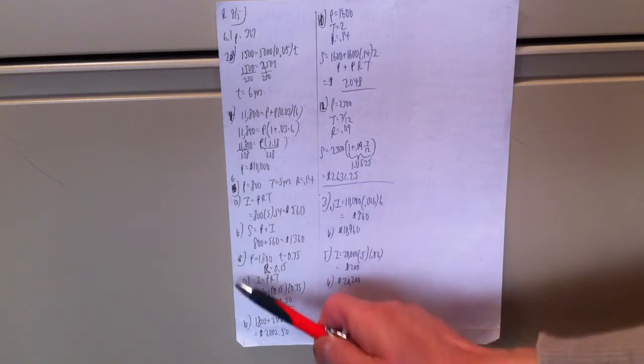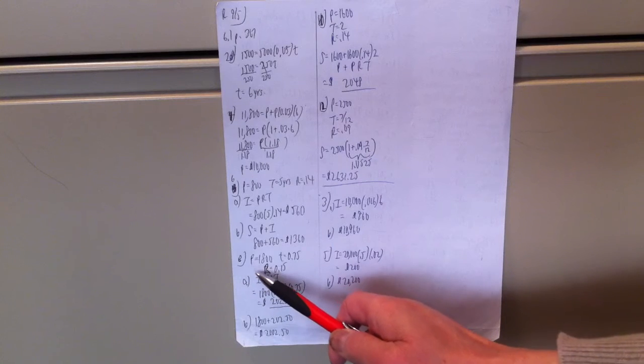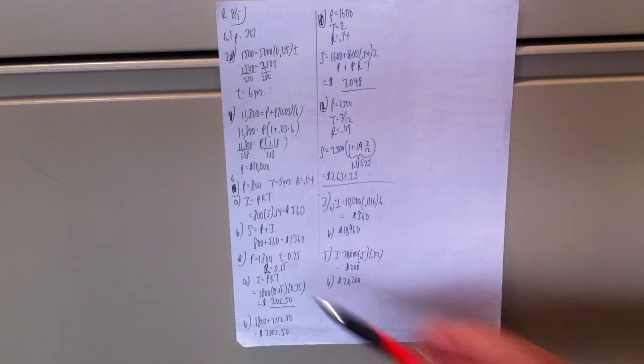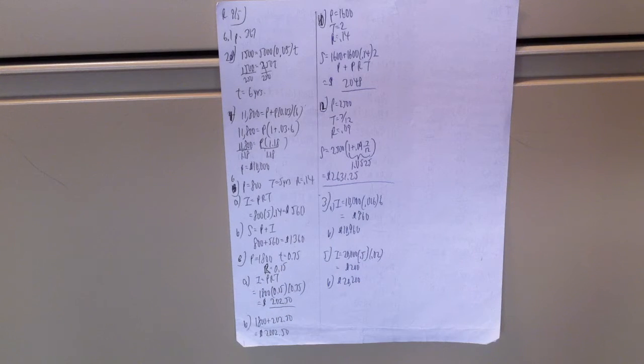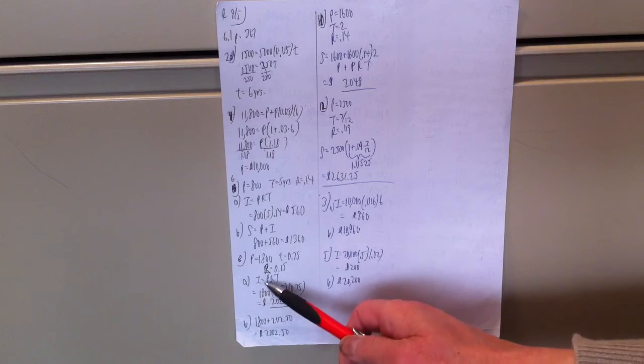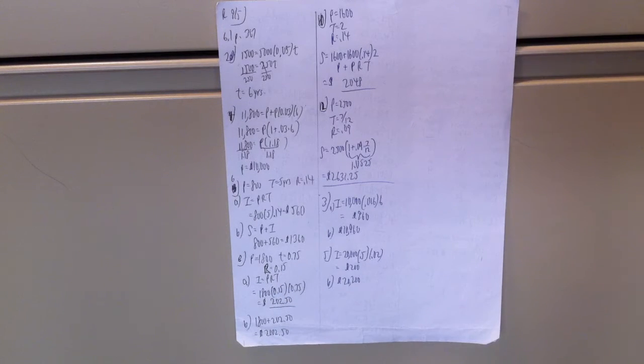Number 8. Principal is 1800. Time is 0.75. That's 3 quarters of a year or 9 months. And the interest rate is 0.15.